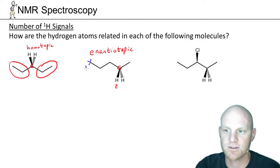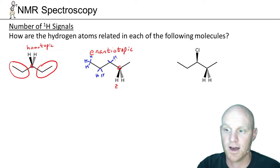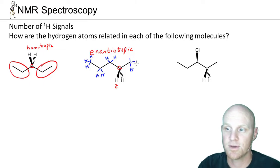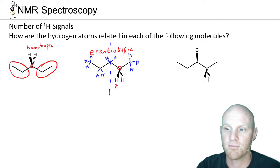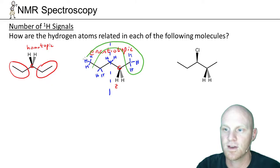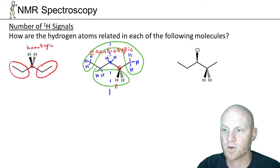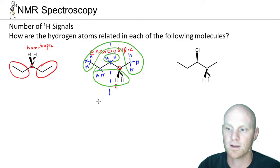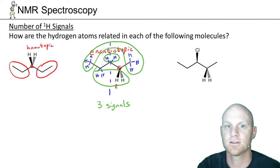Looking at all the hydrogens in this molecule, there is a big plane of symmetry right down the middle. All six of these H's are chemically equivalent, all four of these H's are chemically equivalent, and these two are chemically equivalent — so overall this molecule ends up with three signals.